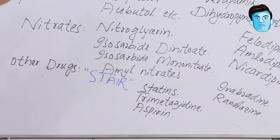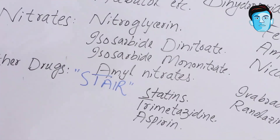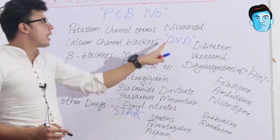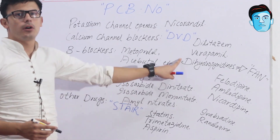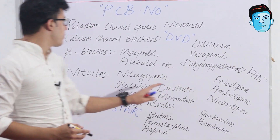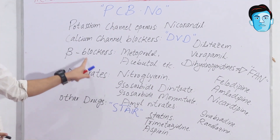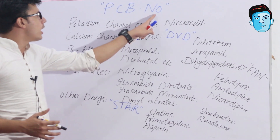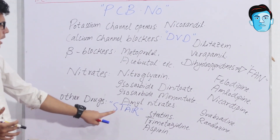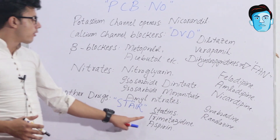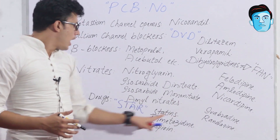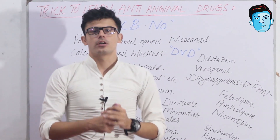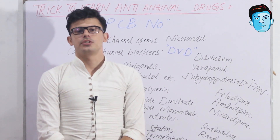To recap: the mnemonic for anti-anginal drugs is PCB NO. P = Potassium Channel Openers (Nicorandil). C = Calcium Channel Blockers — Diltiazem, Verapamil, and Dihydropyridines (Felodipine, Amlodipine, Nifedipine). B = Beta Blockers. N = Nitrates — Isosorbide Dinitrate, Isosorbide Mononitrate, Amyl Nitrate. O = Other drugs, using STAIR: Statins, Trimetazidine, Aspirin, Ivabradine, Ranolazine. I hope you liked the video — please subscribe and share. Thank you!